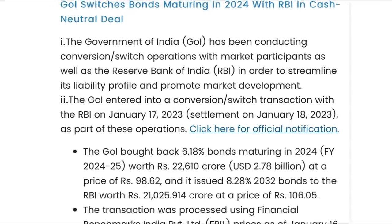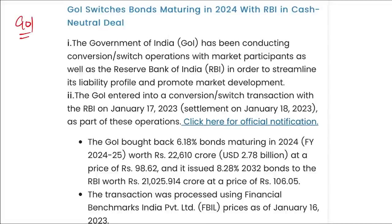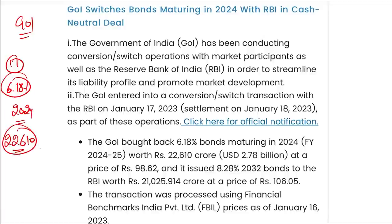The Government of India has switched bonds maturing in 2024 with RBI in a cash-neutral deal, conducting conversion/switch operations to streamline its liability profile and promote market development. On 17th January (settlement 18th January), the government bought back 6.18% bonds maturing in 2024 worth ₹22,610 crore at a price of ₹98.62 and issued 8.28% 2032 bonds to RBI worth ₹21,000 crore at ₹106. The transaction was processed using Financial Benchmarks India Private Limited prices as of 16th January 2023.